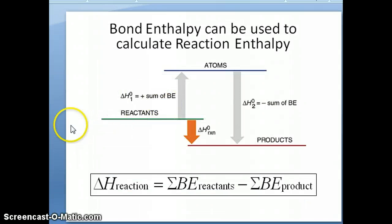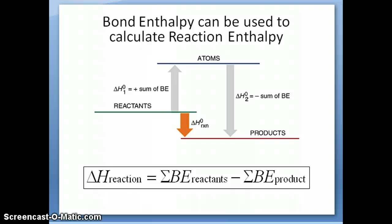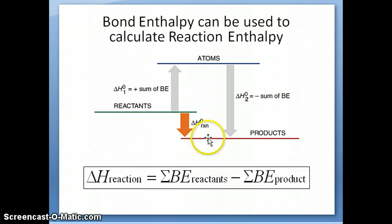Now let's talk about how bond enthalpy values can be useful for calculating the enthalpy of reaction. We previously discussed two methods: using Hess's law by rearranging a series of reactions, and using enthalpies of formation. Now we have a third method — the bond enthalpy calculation.